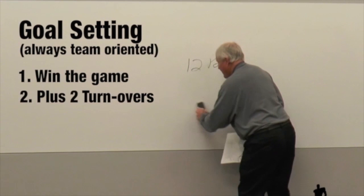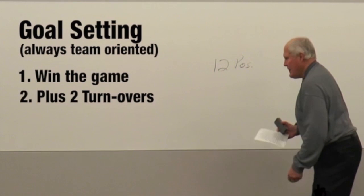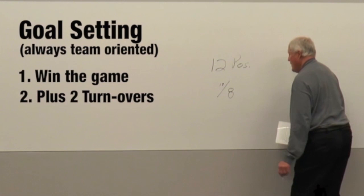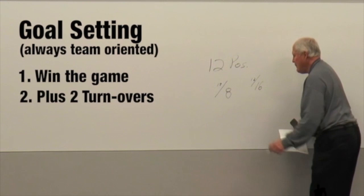the 49ers turned the ball over 4 times. So what that meant was they went from 12 to 8 possessions for the game, and the Seahawks went from 12 to 16 possessions.